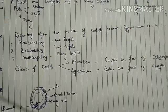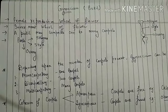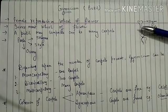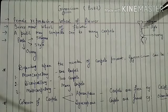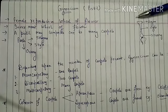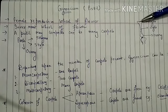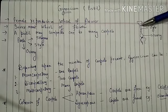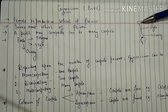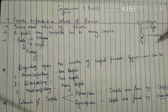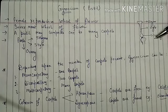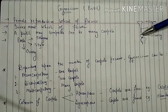Next we will study gynoecium, which is the reproductive whorl of a flower. The single unit of gynoecium is known as carpel. A carpel consists of three parts: stigma, style, and ovary. The stigma receives the pollen grains, the style connects stigma to the ovary, and the lower swollen basal region is the ovary.